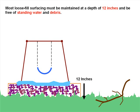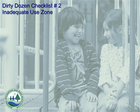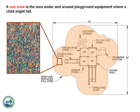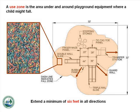Let's move on to Number 2: Inadequate Use Zone. A use zone is the area under and around playground equipment where a child might fall. A use zone should be covered with protective surfacing material and extend a minimum of 6 feet in all directions from the edge of stationary play equipment. Let's review the rules for several common types of use zones.